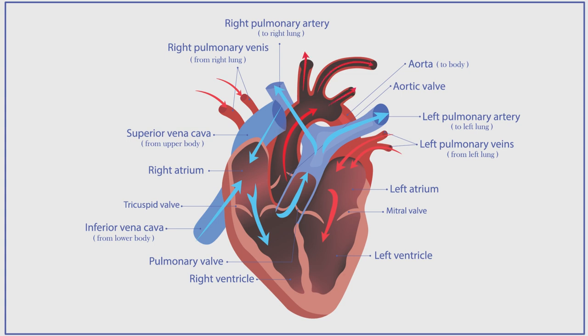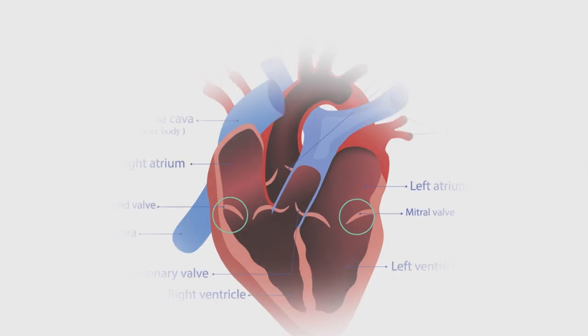The heart is also equipped with four valves that open and close to control blood flow in and out of the four chambers. These valves are the tricuspid, mitral, aortic, and pulmonary valves.